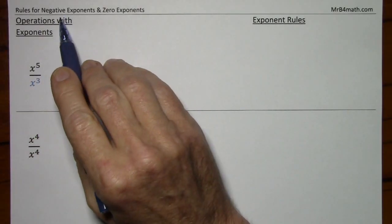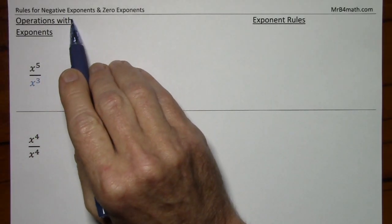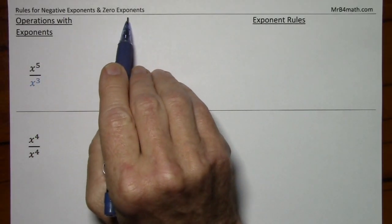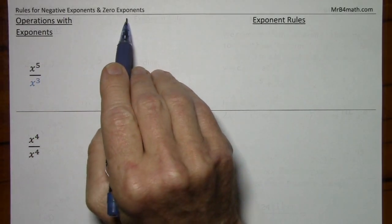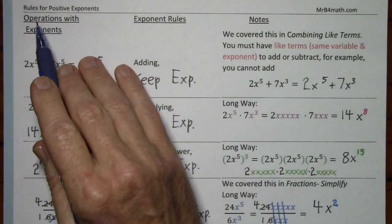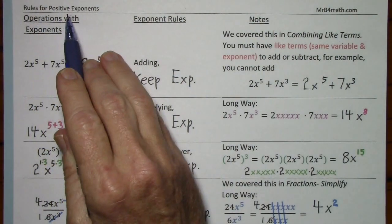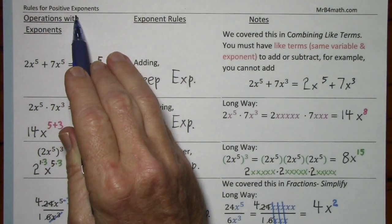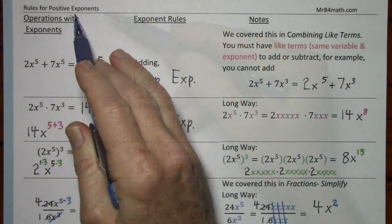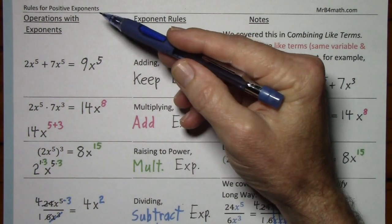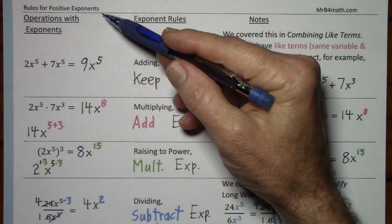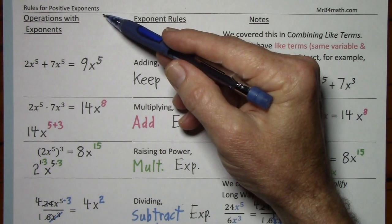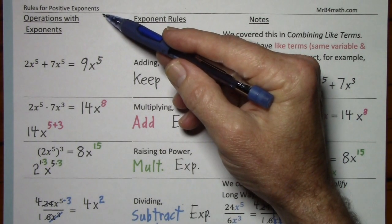In presenting the rules for negative exponents and zero exponents, I'll assume you're familiar with the rules for positive exponents. In fact, we preserve these rules when we include the rules for negative exponents and zero exponents.